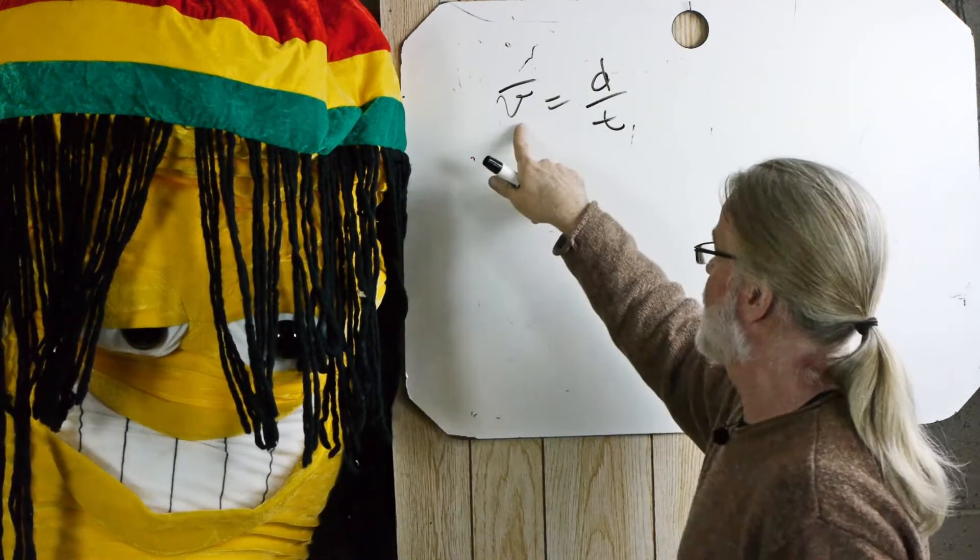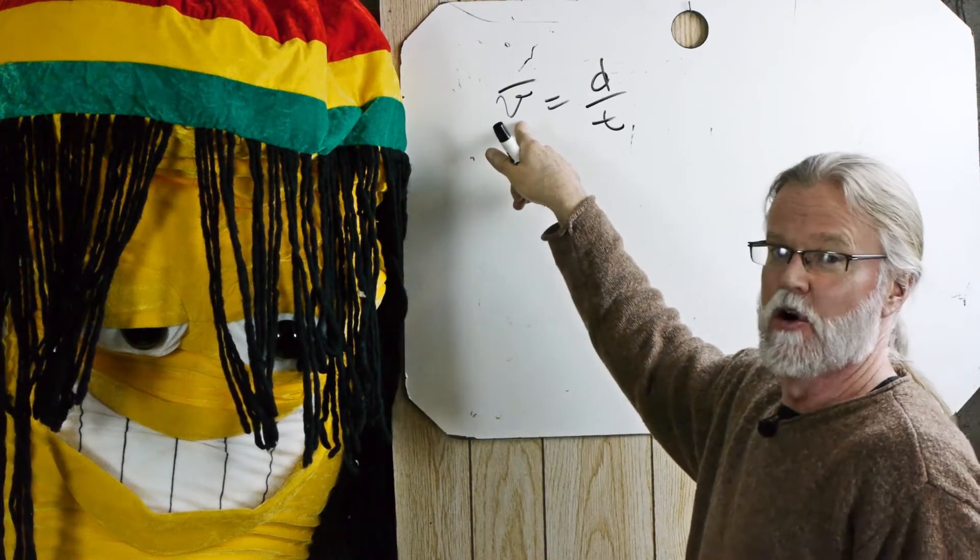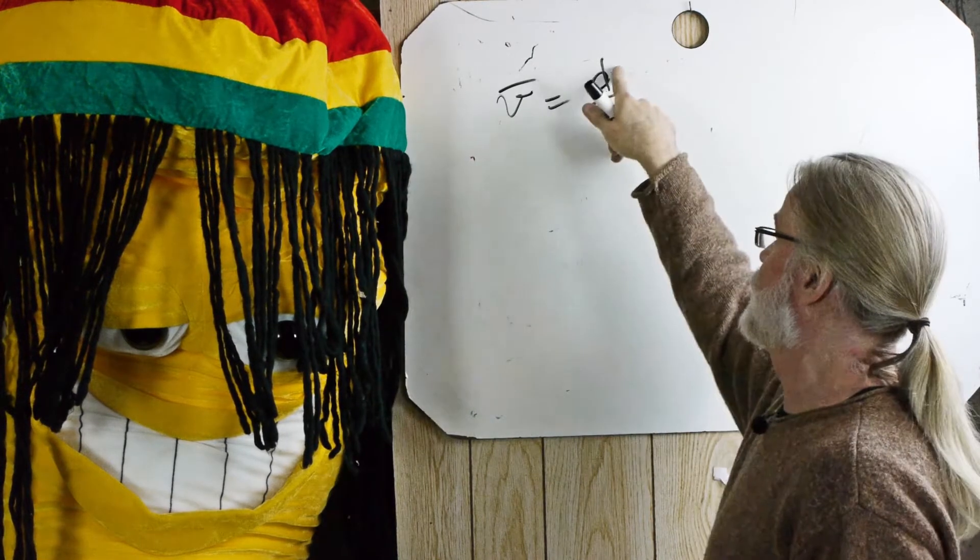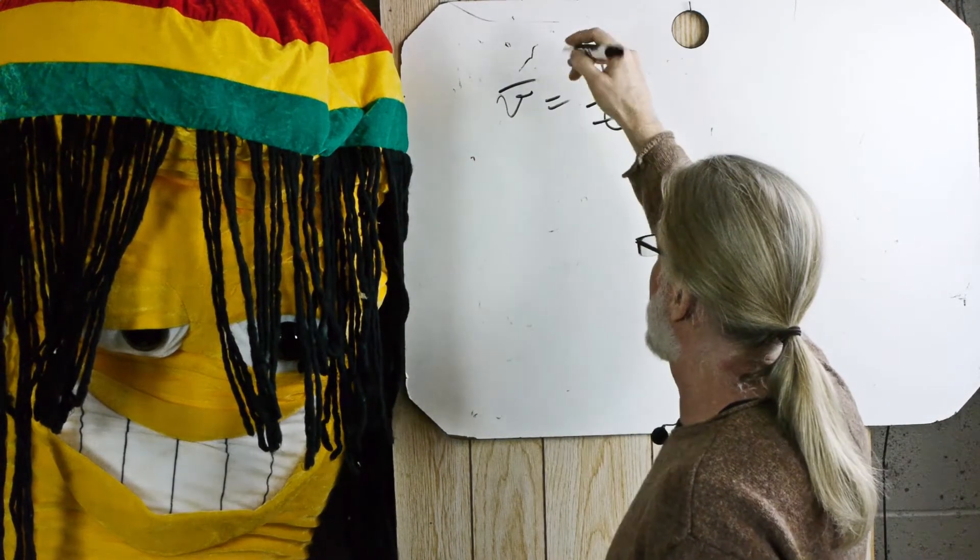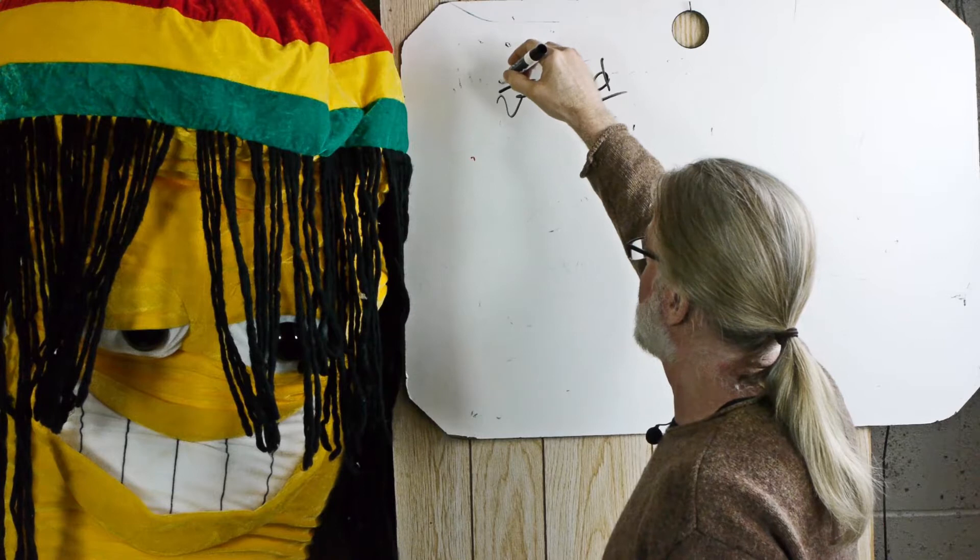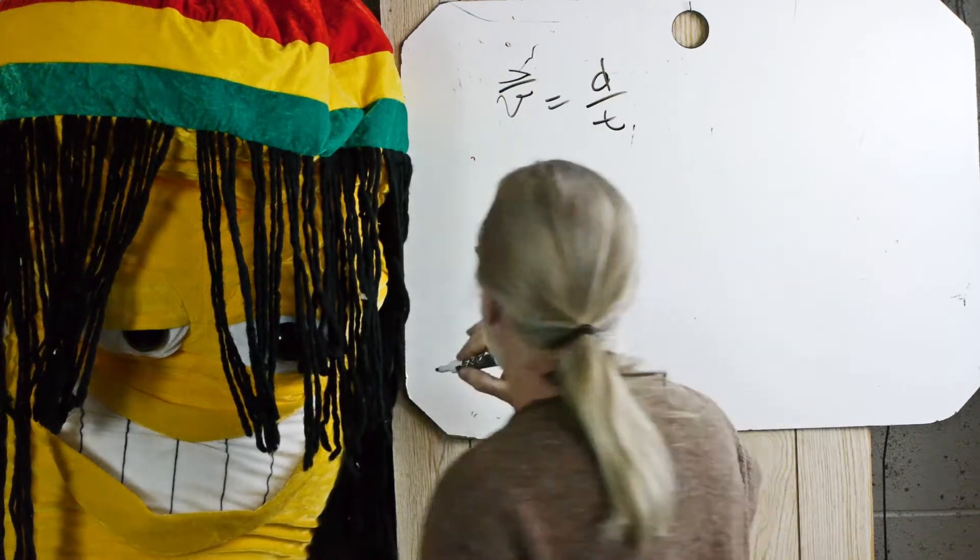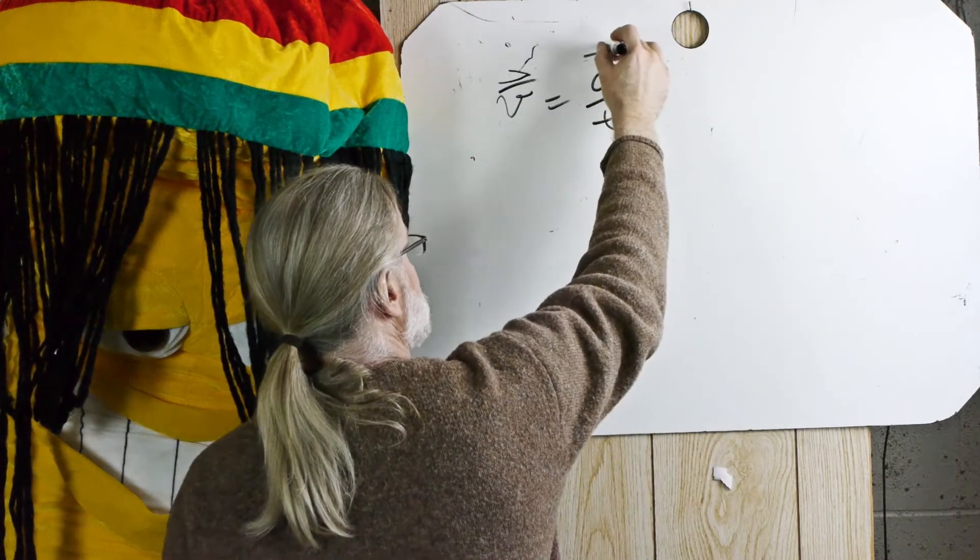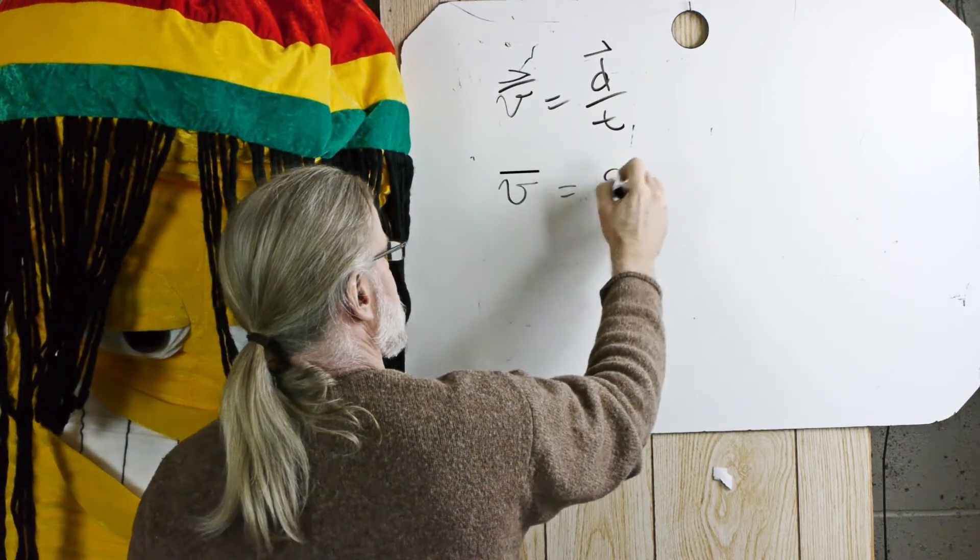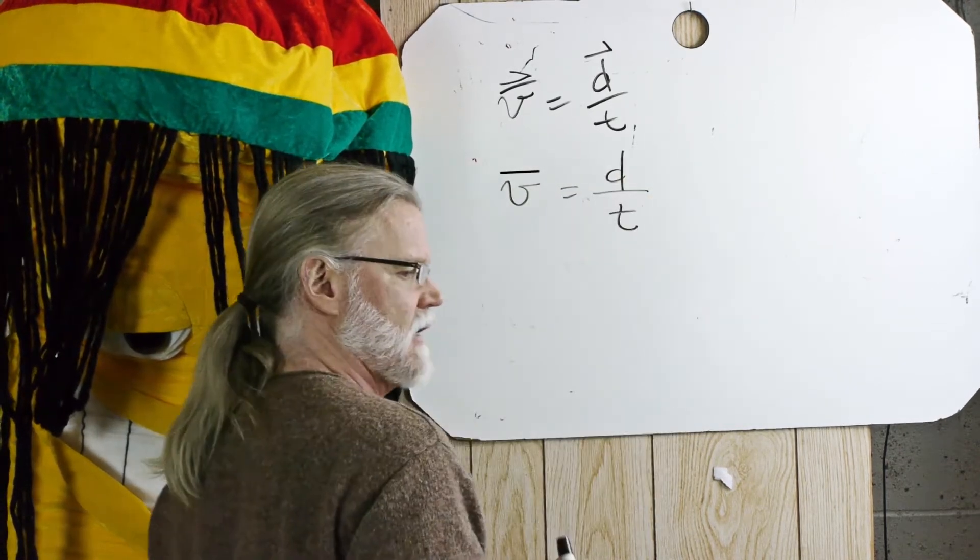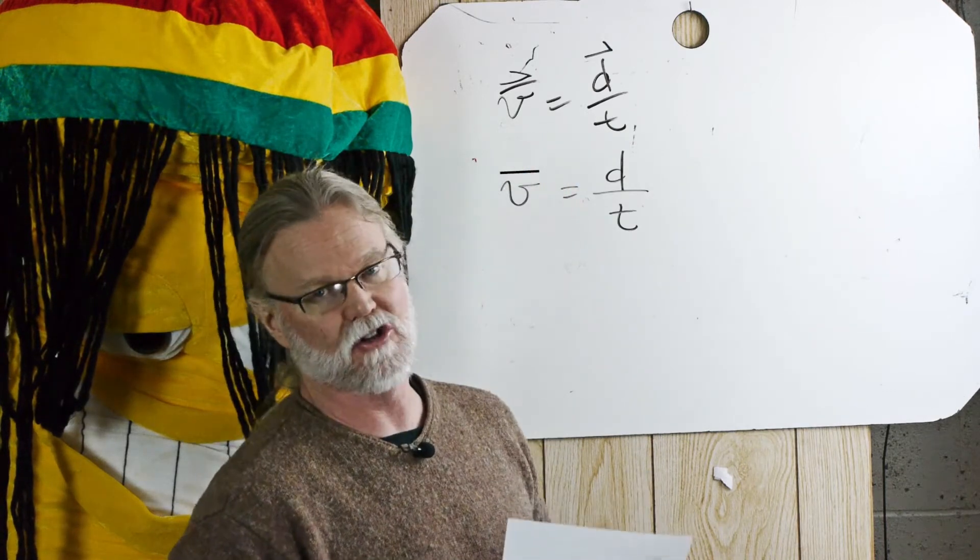This could either be average velocity or average speed, and this could be displacement or distance, depending on the context. So I'm going to say that this is average velocity equals displacement divided by time, and average speed equals distance divided by time. Velocity is a vector.